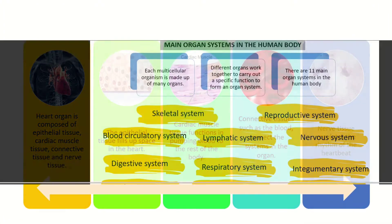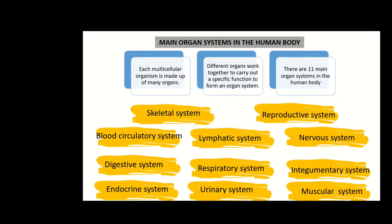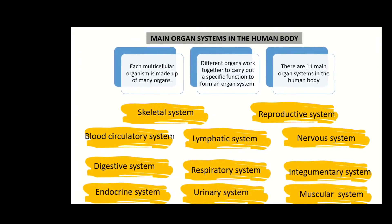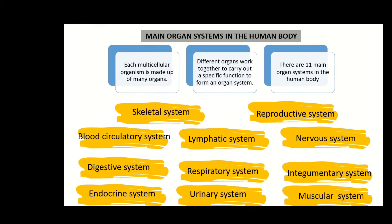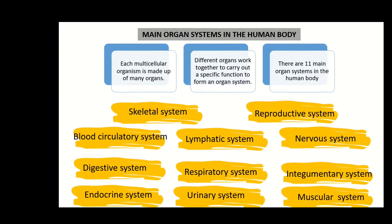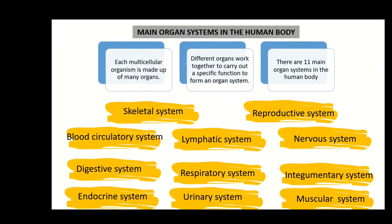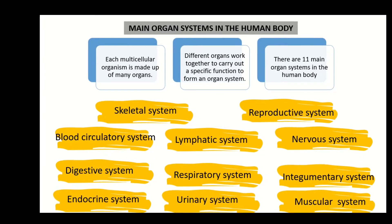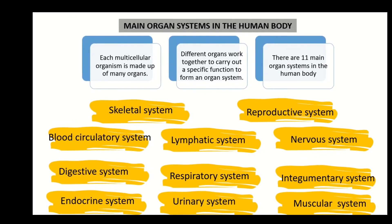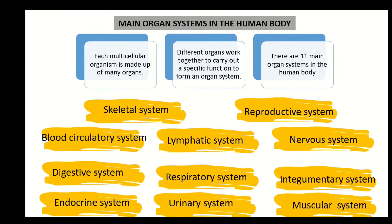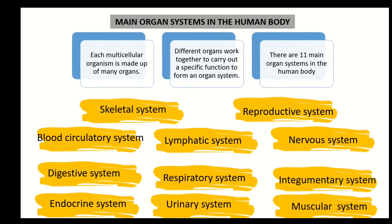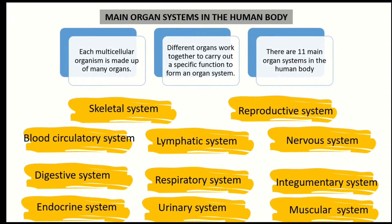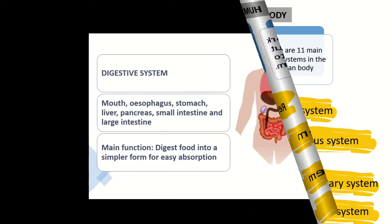Here are the main organ systems in the human body. Each multicellular organism is made up of many organs, and different organs work together to carry out a specific function to form an organ system. For the human body, there are about 11 organ systems: skeletal, reproductive, blood circulatory, lymphatic, nervous, digestive, respiratory, integumentary, endocrine, urinary, and muscular.